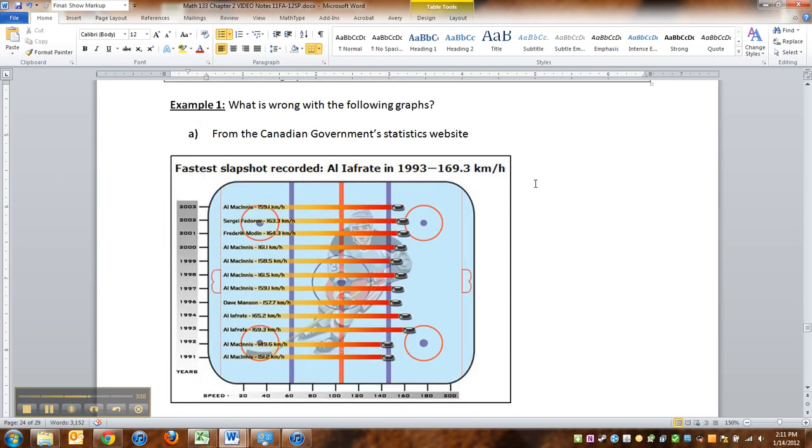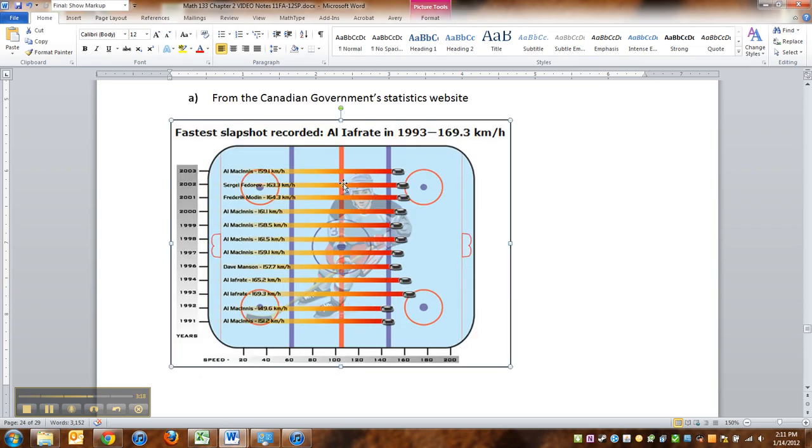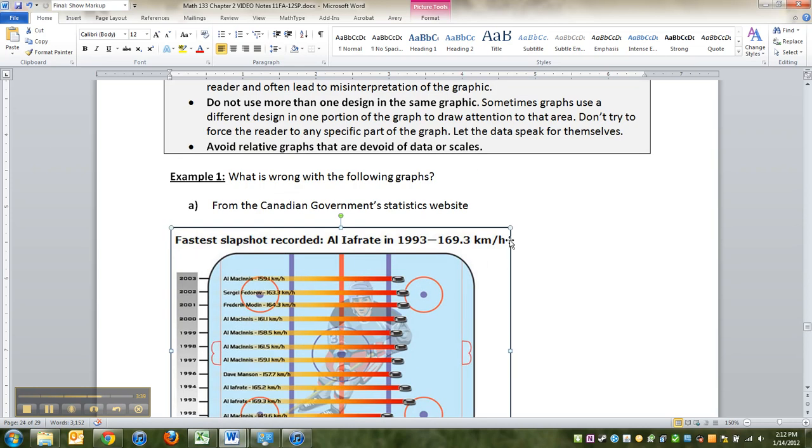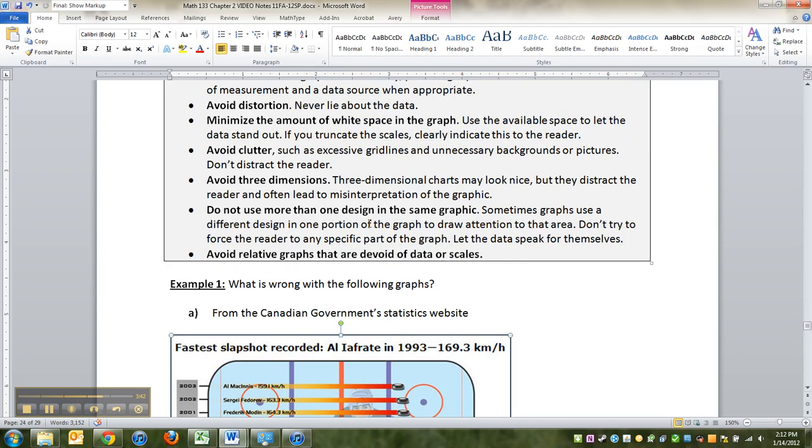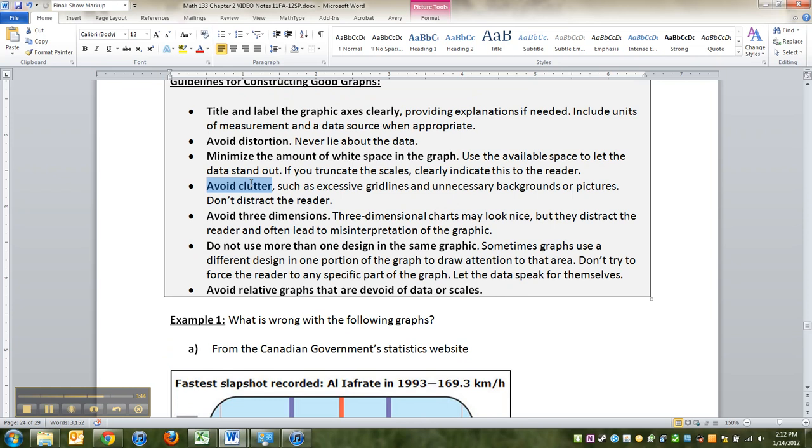All right, so let's look at some graphs that are just horrid, and this is actually one of the worst graphs I've ever seen. It is so cluttered. It is a hockey rink, believe it or not, and it's a bar graph, I guess. I don't really know. It's actually even a kind of a time series graph because it's got these different years, but you got the hockey player in the background, you got all the circles, you got the extra lines. I'm not even sure where the bars end. Do they end at the puck, or do they end at the start of the puck, or the end of the puck? Who knows? I don't know. So it is a giant mess.